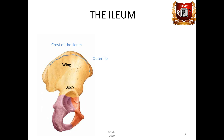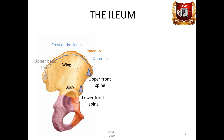Along the crest stretch three parallel lines for muscle attachment: the outer lip, labium externum, the inner lip, labium internum, and the intermediate line, linea intermedia, which is located between them. From the front and from behind the crest ends with protuberances. On the outer surface of the wing there are weakly expressed rough lines on which the gluteal muscles begin.